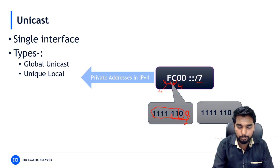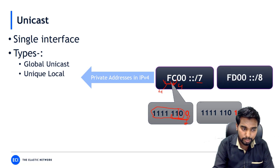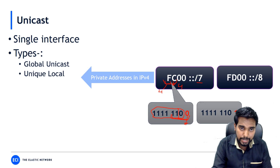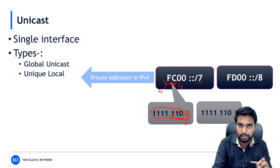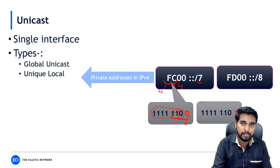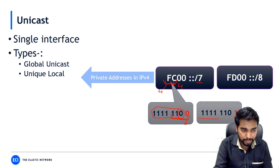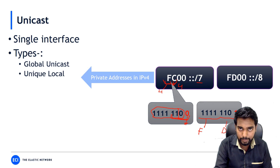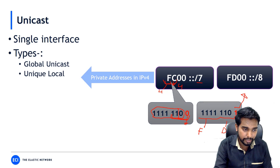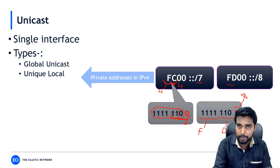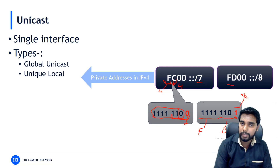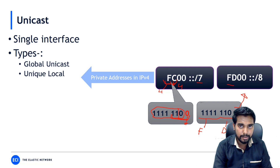There's a special twist: the eighth bit is called the L-bit, and it is always 1. L-bit equal to 0 is reserved for future use. With L-bit always 1, the first two hex digits become FD. So any IPv6 address starting with FD is a unique local address and cannot be routed globally.